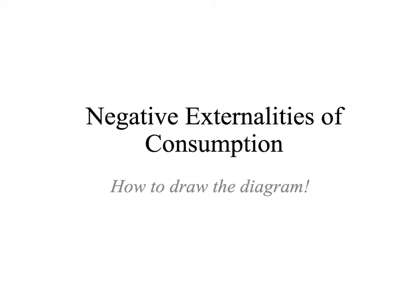Hey everybody, hope you're doing well today. Let's take a look at the negative externalities of consumption graph, and we're going to limit this video to just how we're going to draw it. Remember, there are many things that when they are consumed adversely affect third parties — things like smoking cigarettes, driving a car and air pollution, loud music and noise pollution.